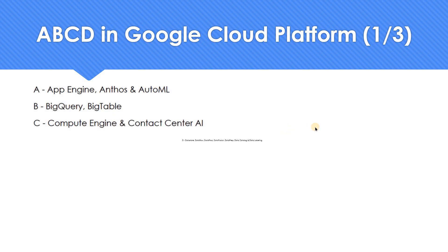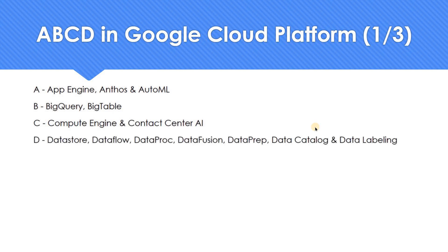Moving on to D. With D, we have lots of products — everything starts with 'Data': Datastore, Dataflow, Dataproc, Data Fusion, Dataprep, Data Catalog, and Data Labeling. There's no constraint on the number of products we can get with D. D is really populated — it's like D for Dog, D for Dumbbell — you have lots of stuff. D has no issues at all.